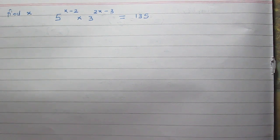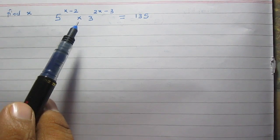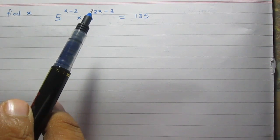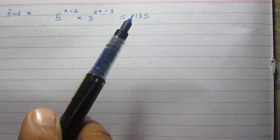Find x if 5 raised to the power x minus 2 multiplied by 3 raised to the power 2x minus 3 is equal to 135.